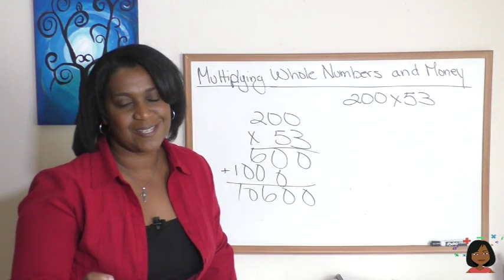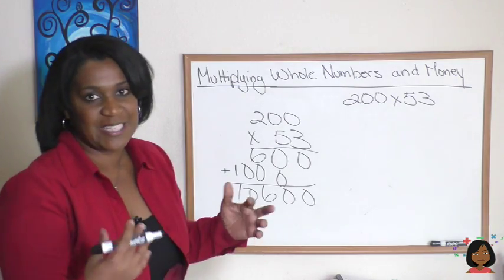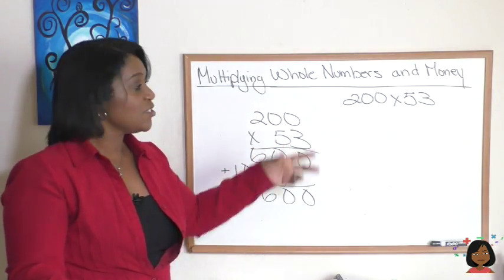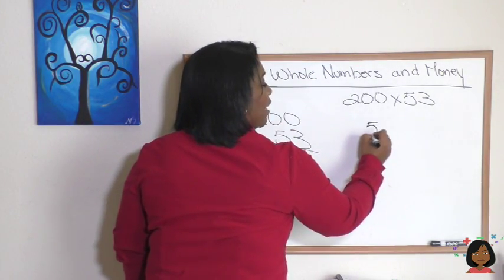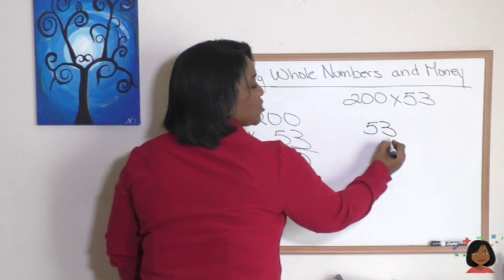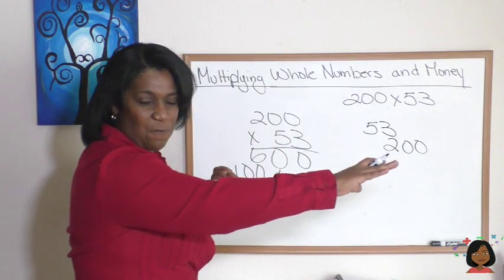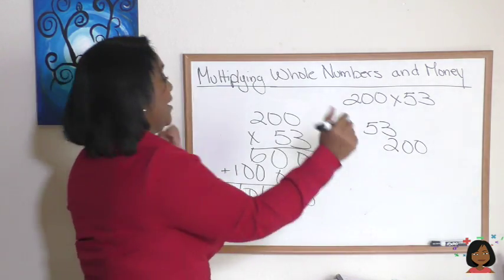Whenever you have a number that has zeros in it, take the number that has the most zeros—200 has the zeros—we're going to write our 53 on top and write our 200, but we're going to shift those two zeros so they're hanging out over the edge because we're not going to deal with them.